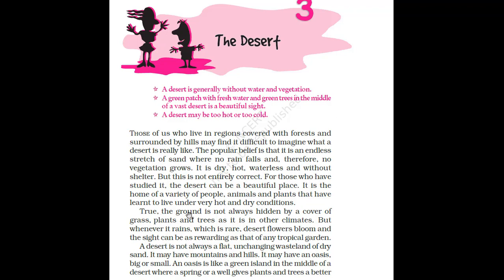The ground is not always hidden by a cover of grass, plants and trees as it is in other climates. But whenever it rains, which is rare — that means it happens very few times — desert flowers bloom, that means desert flowers blossom. And the sight can be as rewarding as that of any tropical garden. Tropical garden means a garden with tropical plants benefiting from good rainfall and decent irrigation.